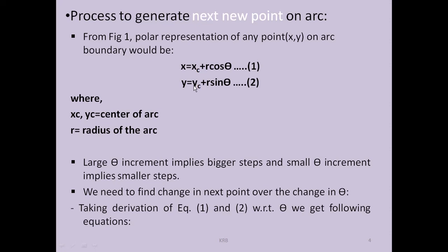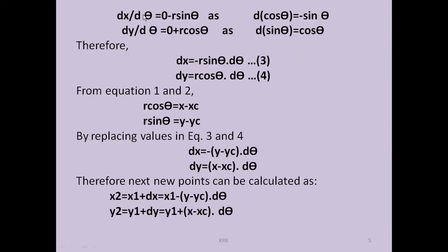Similarly, dy/dtheta: yc is constant so it becomes zero, plus derivative of r·sin(theta) — r is constant and derivative of sin(theta) is cos(theta). Therefore dy/dtheta = 0 + r·cos(theta). After manipulating these expressions, what we get are the variation parameters: dx = −r·sin(theta)·dtheta, and dy = r·cos(theta)·dtheta.